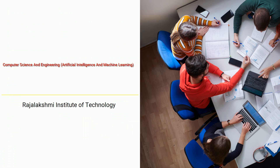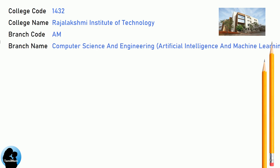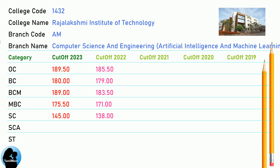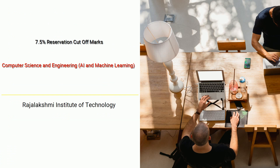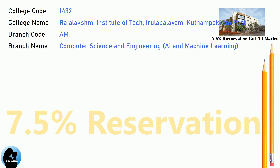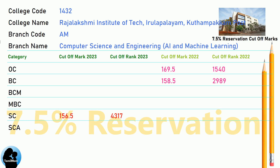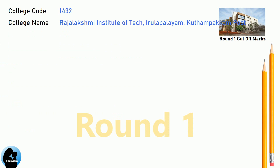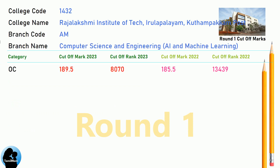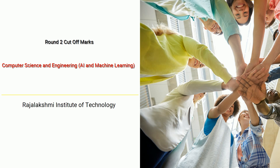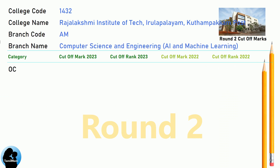DNA Cut-Off for Rajalakshmi Institute of Technology in Computer Science and Engineering, Artificial Intelligence and Machine Learning. DNA 7.5 Reservation Cut-Off, DNA Round 1 Cut-Off, and DNA Round 2 Cut-Off for Rajalakshmi Institute of Technology in Computer Science and Engineering, AI and Machine Learning.